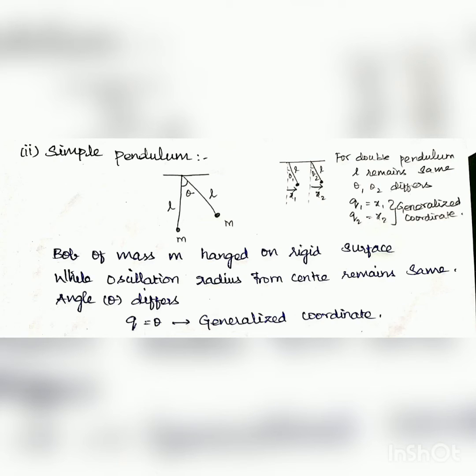In simple pendulum, a bob of mass m hangs on a rigid surface. While oscillating, the radius from its center remains unchanged. But the angle theta differs. Therefore, theta is known as generalized coordinate.